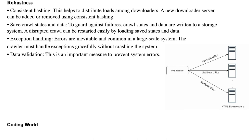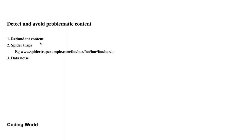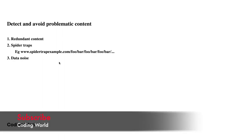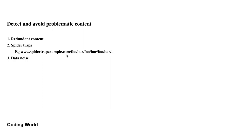We also need to detect and avoid problematic content. Redundant data should be avoided — if we are scraping the same content again and again, we should skip it using hash comparison. Spider traps are URLs that loop indefinitely without ending; these types of websites must be detected and skipped. Finally, noise — such as advertisements and unrelated data scraped during crawling — should be filtered out while doing web crawling.